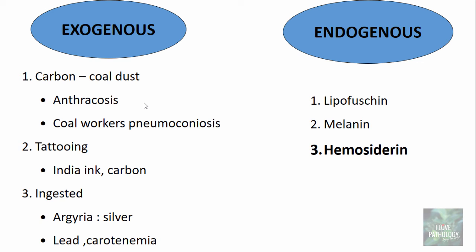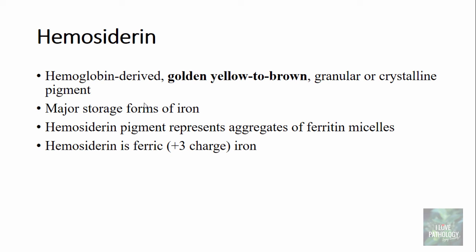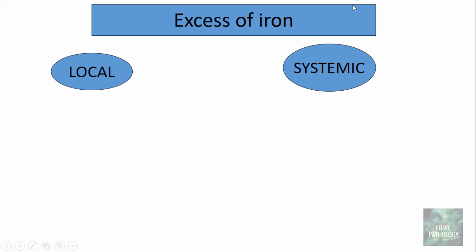Moving on to the last endogenous pigment — hemosiderin. Hemosiderin is a hemoglobin-derived golden-yellow to brown granular or crystalline pigment, and is one of the major storage forms of iron. Hemosiderin represents aggregates of ferritin micelles; it is a ferric iron (Fe³⁺). Small amounts of hemosiderin can be seen in mononuclear phagocytes of the bone marrow, spleen, and liver, which are actively engaged in red cell breakdown. Excess of iron is referred to as hemosiderosis, which can be localized or systemic.